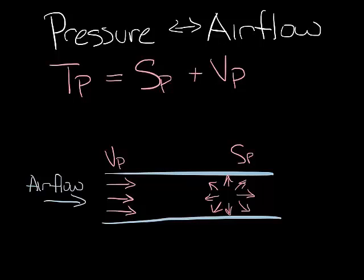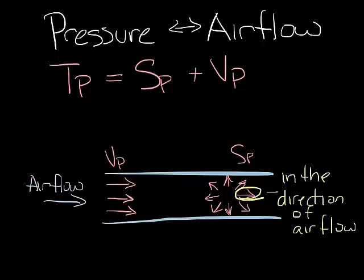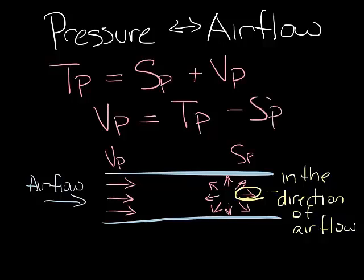The thing is, velocity pressure is hard to measure directly because there's a static pressure component going in the direction of airflow as well. So we usually use total pressure and static pressure to calculate velocity pressure. Velocity pressure equals total pressure minus static pressure.